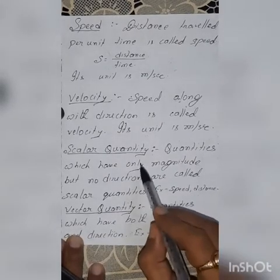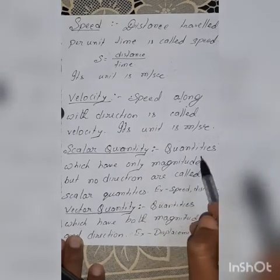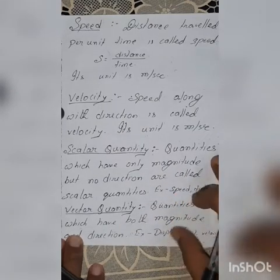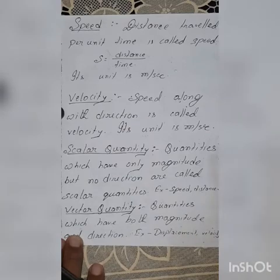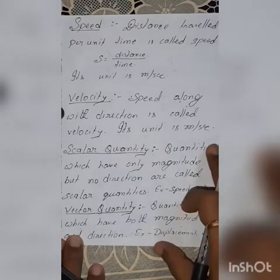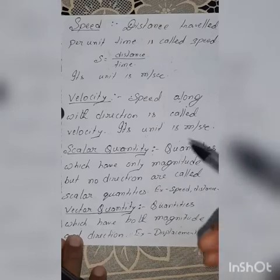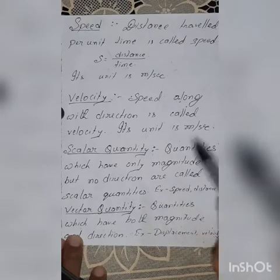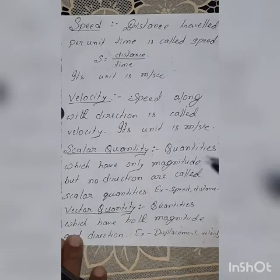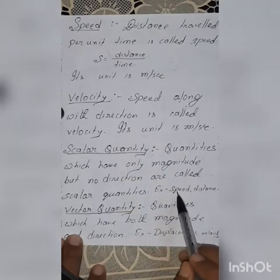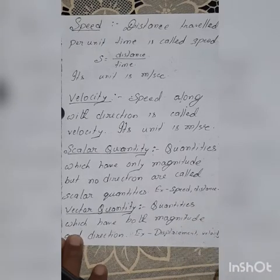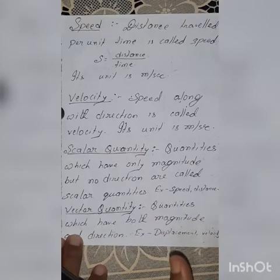Let us move on to scalar quantities. Quantities which have only magnitude but no direction are called scalar quantities. There are certain quantities which have only a numerical number and a unit associated with it, but from that we cannot find any direction. For example, if I tell you about 1 kg of rice, does it indicate any direction? No. Examples of scalar quantities include speed and distance.